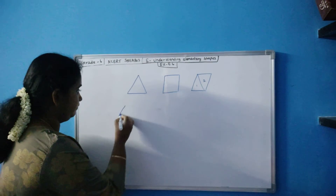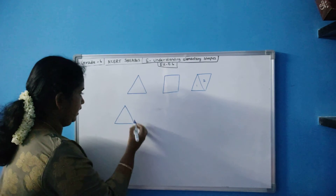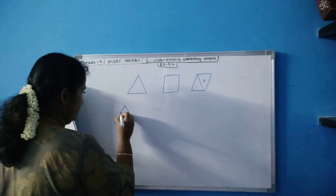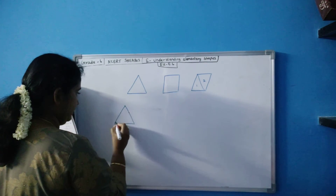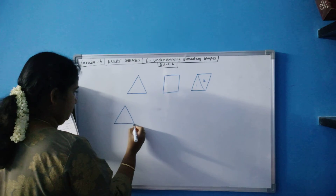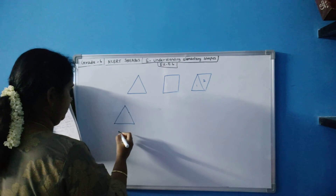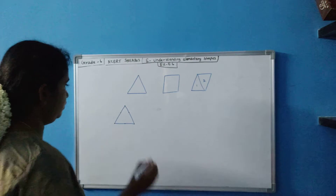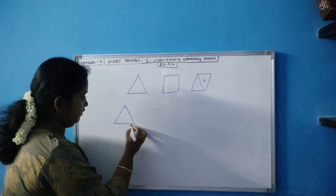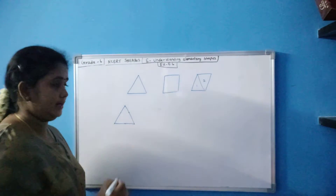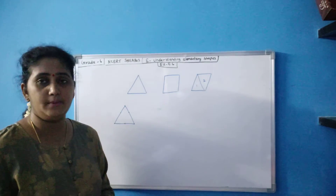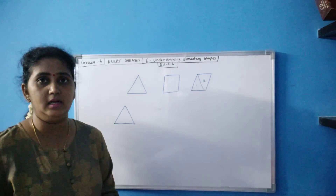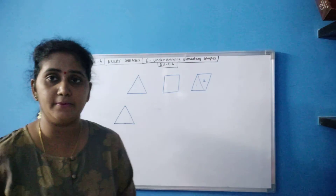Next one — six matchsticks. Using six matchsticks: one, two, three, four, five, six. Using six matchsticks you can form a triangle, and also the sum of two sides is greater than the third side, and this is also an acute angle triangle. So with this, Exercise 5.6 is completed.